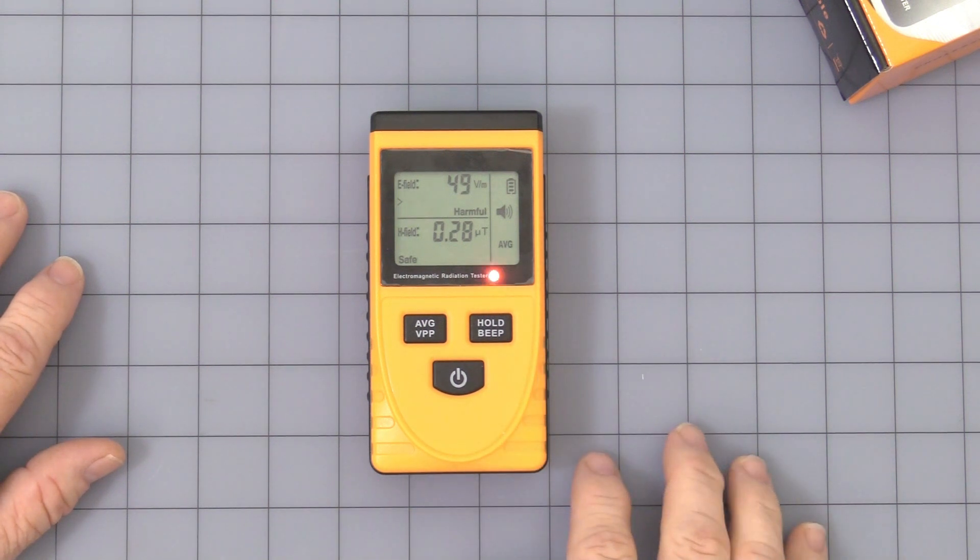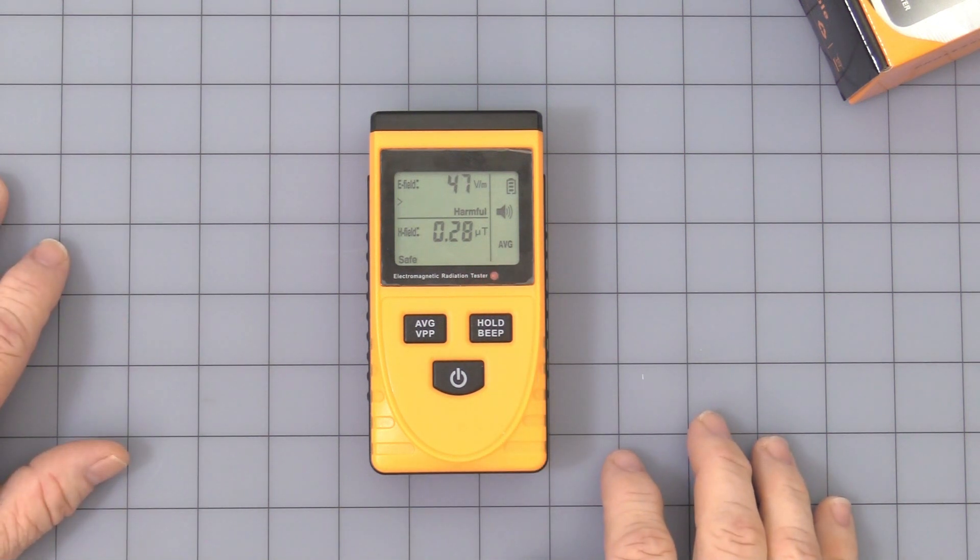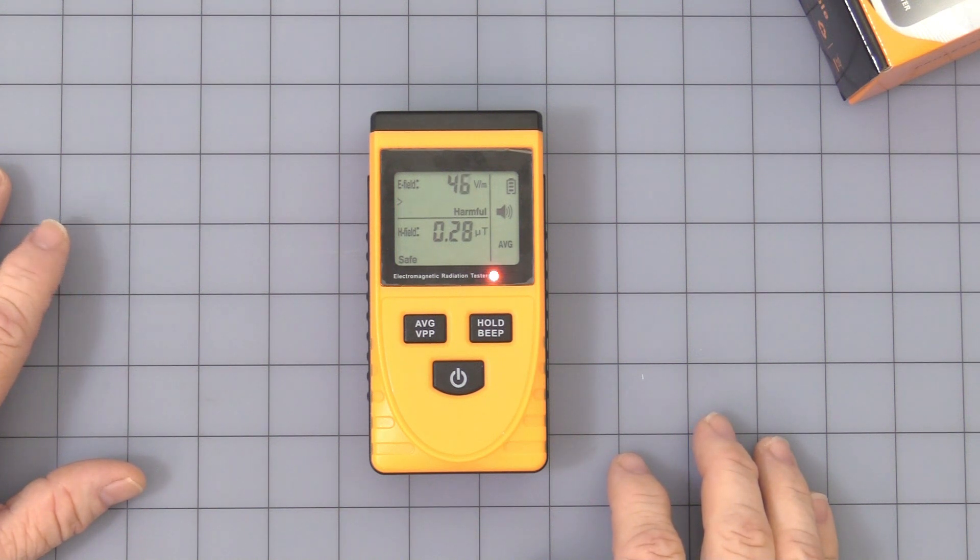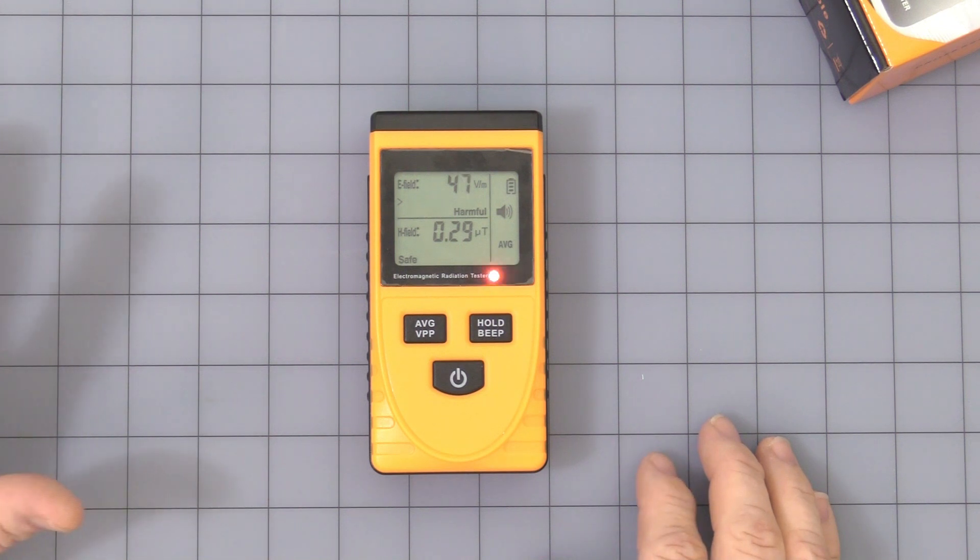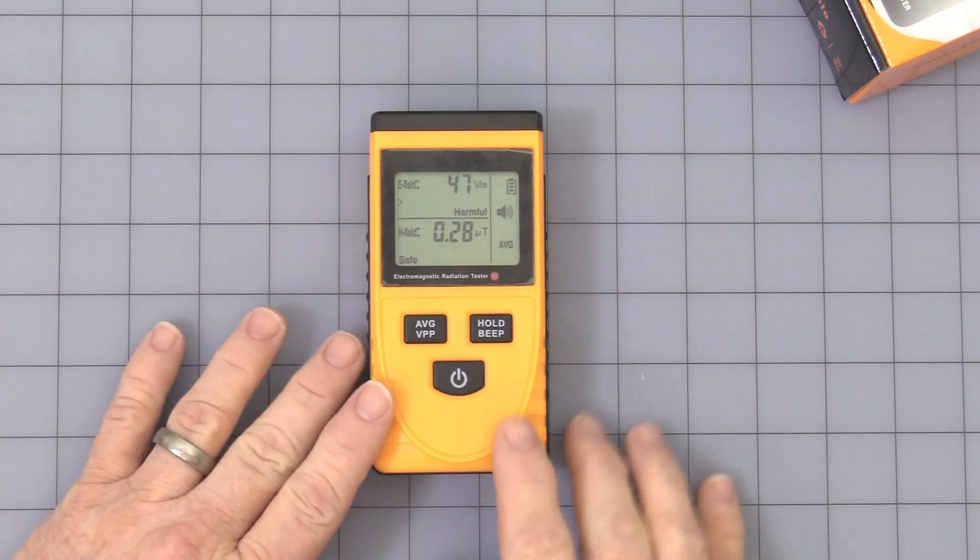It can measure between 1 and 1,999 volts per meter with 1 volt per meter accuracy, or 0.01 to 19.99 micro teslas with 0.01 micro tesla accuracy.